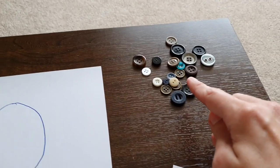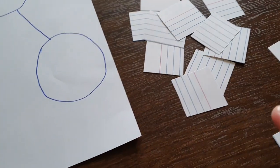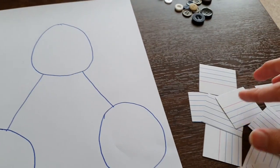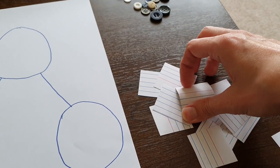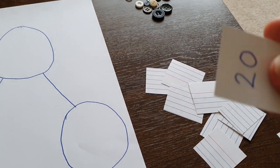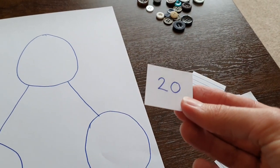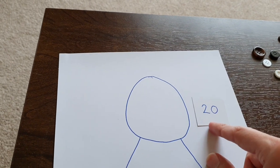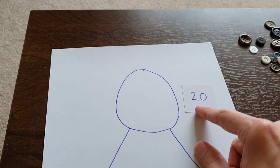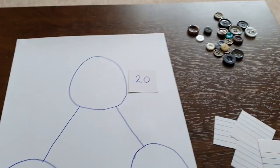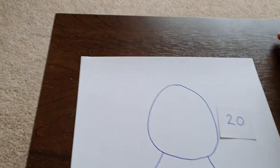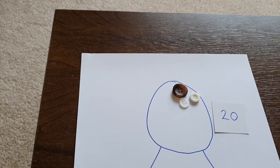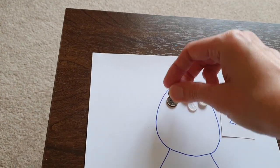You need some counters and some number cards. I've made my own just by writing them. So what you do is you pick a number. Now I think these ones are mainly teen numbers to help me practice my teen numbers, but you could use any number that you want. So I've got 20 and we're going to put 20 counters onto your whole, or however many you got.